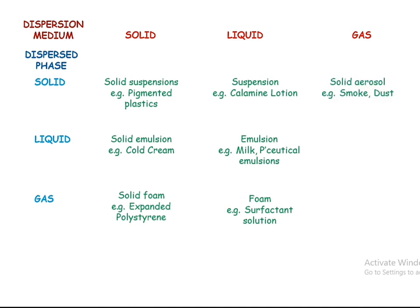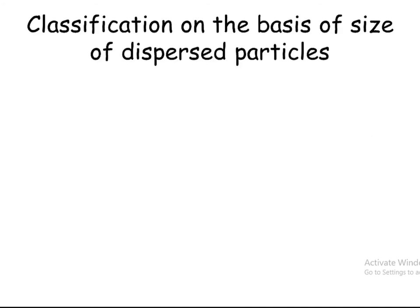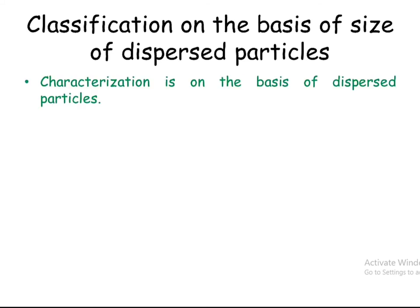When the dispersion medium is gas and the dispersed phase is solid, solid aerosols are formed — for example, smoke and dust, also called dry aerosols. When the dispersion medium is gas and the dispersed phase is liquid, liquid aerosols are formed — for example, fog, mist, or perfumes. When both the dispersion medium and dispersed phase are gases, no formulation is formed in this classification.